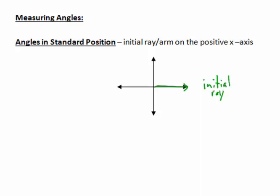We're going to compare the initial ray to some other arm, which we call the terminal arm. The angle between the initial arm, or the initial ray, and the terminal arm is the angle in standard position. We're often going to use Greek letters to measure that angle — there's our angle in standard position between the initial ray and the terminal arm.